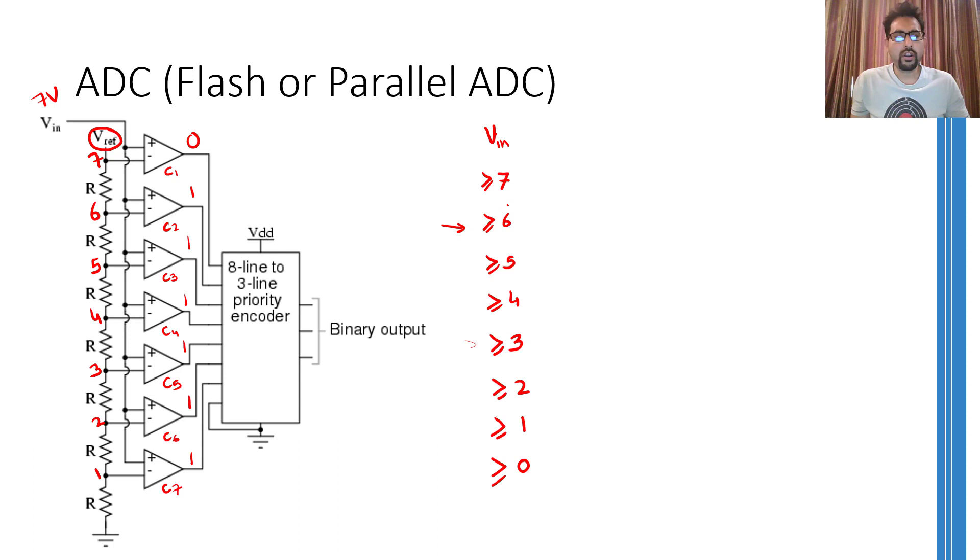Over here I am supposing that if the voltage is greater than or equal to 6, it is less than 7, or if it is greater than or equal to 5, it is less than 6. Which means that this 7 means value greater than 7, this 6 means value between 6 and 7, then this 5 means value between 5 and 6, this 4 would mean value between 4 and 5, and so on.